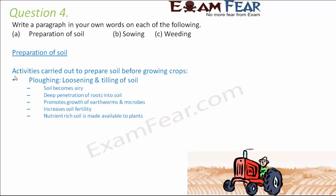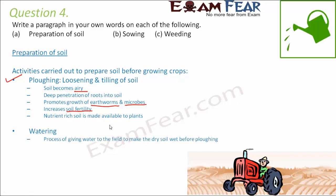The first activity is plowing, where the soil is loosened so it becomes more airy. Once the soil is more airy, roots can penetrate deeper, allowing better absorption of nutrients and water. Loosening the soil also allows the growth of earthworms and microbes, which are farmers' friends and help increase soil fertility. Additionally, nutrient-rich lower layers of soil get brought toward the surface, making nutrients more available to plants.